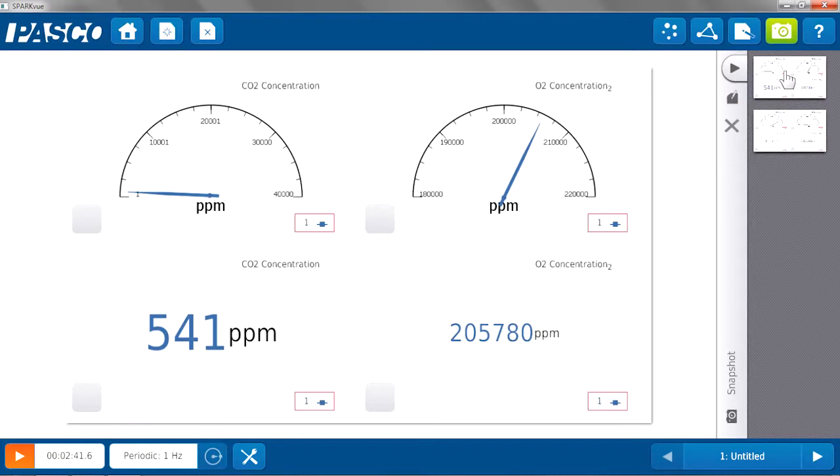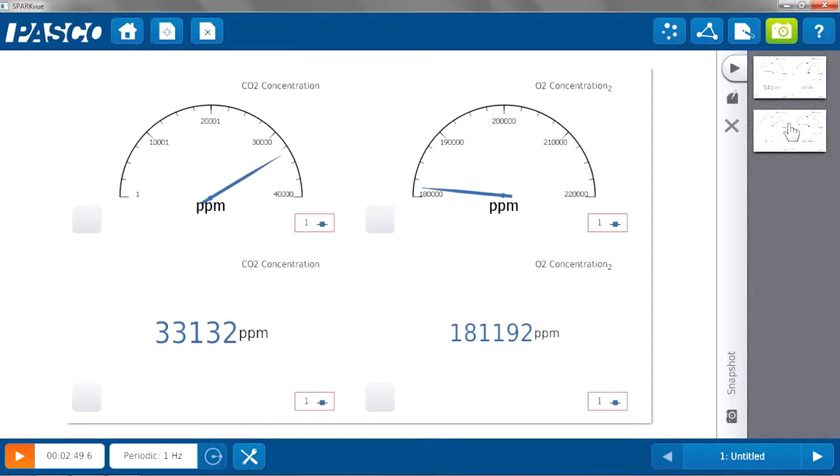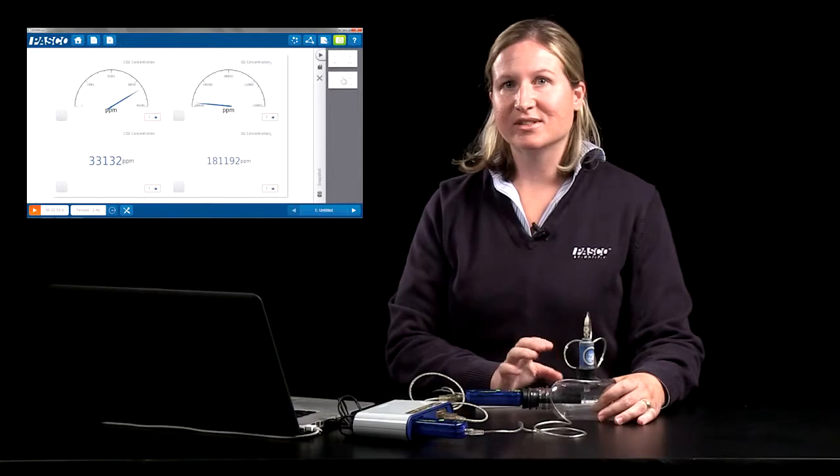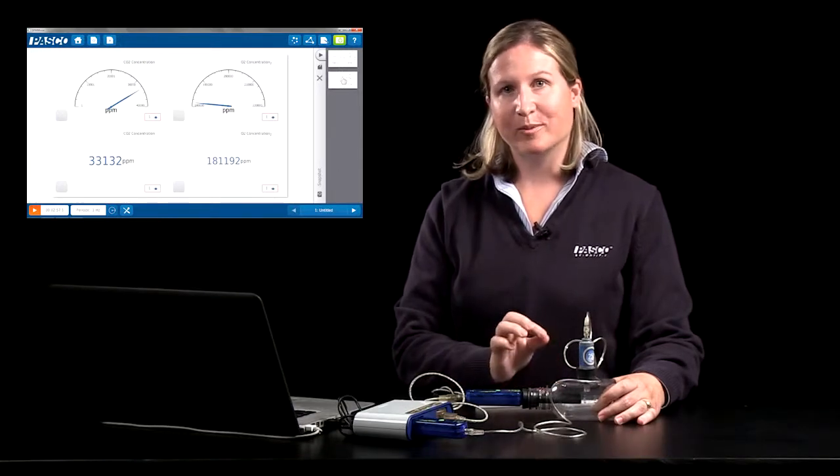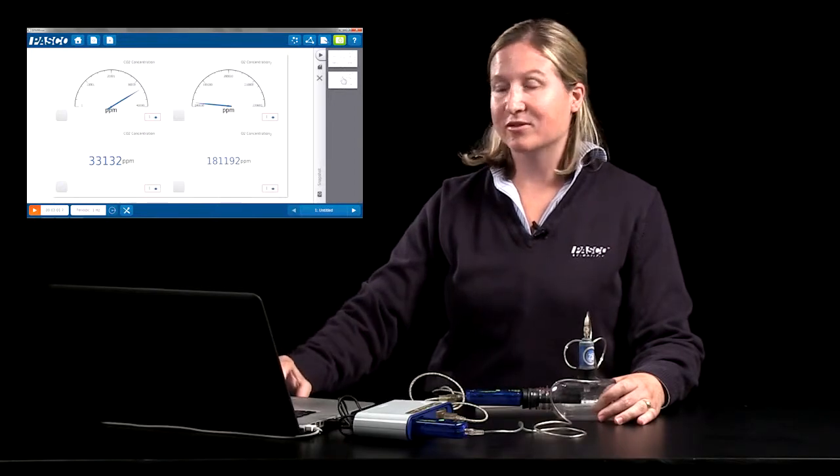I started with 541 parts per million of carbon dioxide in that sample of room air, and you can see for my sample of exhaled air that it went up to 33,132 parts per million. Students can see that the difference in concentration is not just a little bit between the air and their lungs, but the difference is significant.